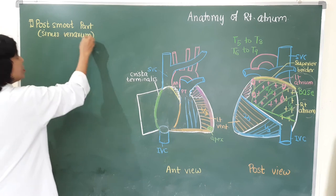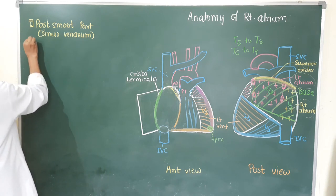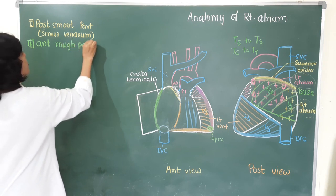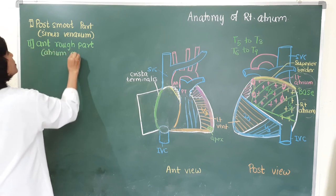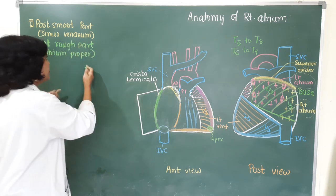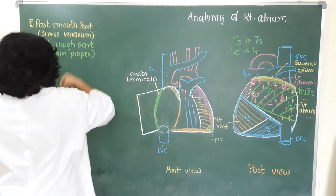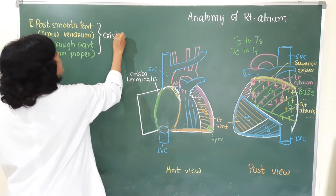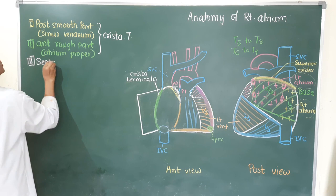The posterior smooth part, or sinus venarum, is developmentally derived from absorption of the right horn of the sinus venosus. The anterior rough part is called the atrium proper, and it is developed from the right half of the primitive atrial chamber of the heart tube.